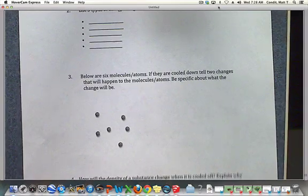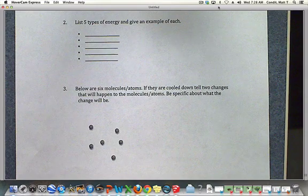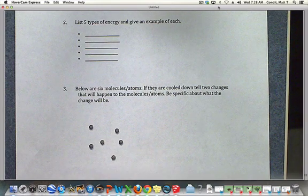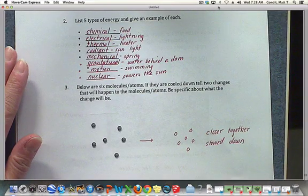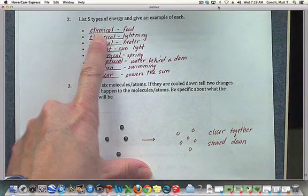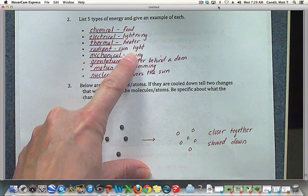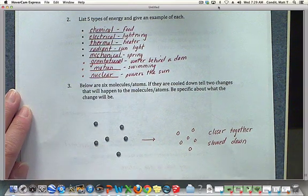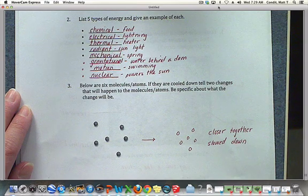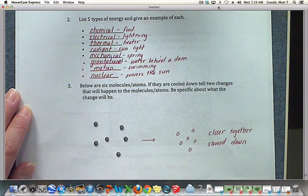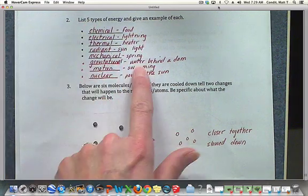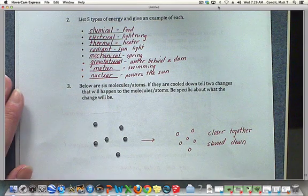Okay, question number two asks you to list five types of energy and give an example of each. And again, there are many, many possible answers for these. We just listed some: chemical—food; electrical—lightning; thermal—a heater; radiant—sunlight; mechanical—spring; gravitational—water behind a dam; motion—swimming; and nuclear powers the sun. Again, there are many different options to describe those different energies.